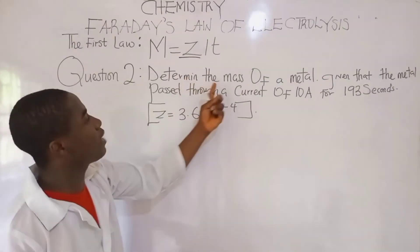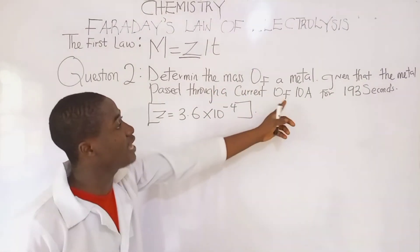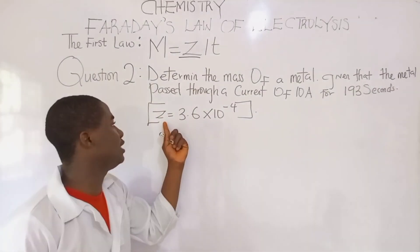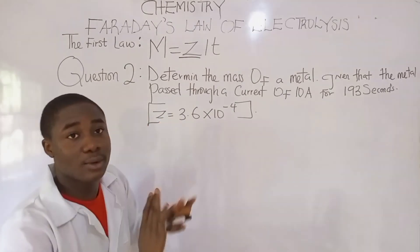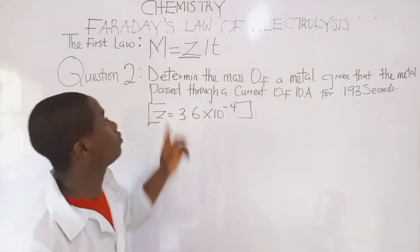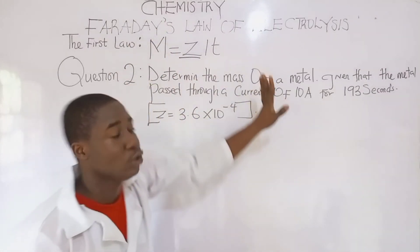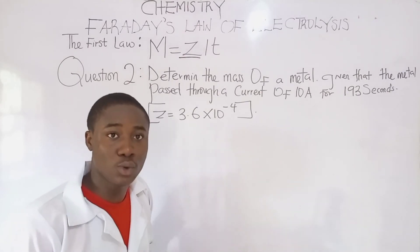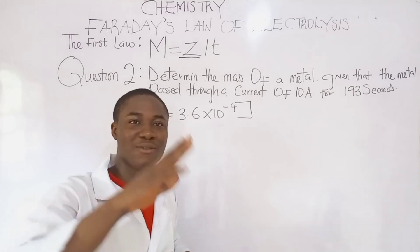The question says: determine the mass of a metal, given that the metal passed through a current of 10 amperes for 193 seconds, and they're giving us Z — the electrochemical equivalent. Mass is already the subject in the formula, so just input the parameters and get the correct answer. If you like this video, hit the subscribe button and share my videos with your friends. Thank you very much and God bless.